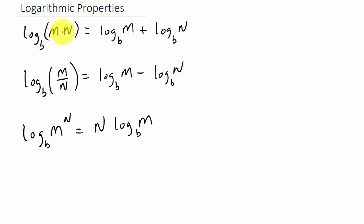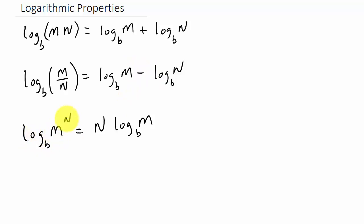If you have terms multiplied, we split those up using addition. The log of M over N with base B is the log of M with base B minus the log of N with base B — division is expanded using subtraction. And the log of M raised to the N with base B equals N times the log of M with base B, meaning we take the exponent and bring it down in front.